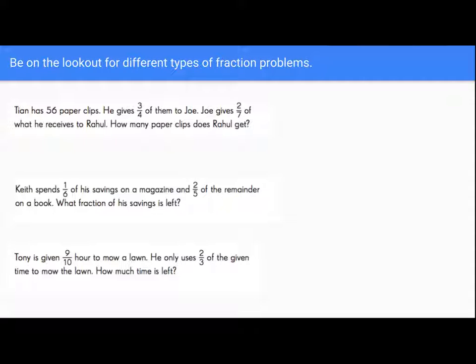The wording is really going to help us understand what type of bar model we can draw to help us solve the problem. So we've seen this first problem before. It says Tian has 56 paperclips. He gives three-fourths of them to Joe. So this problem, I really want to annotate and understand that I actually have a total here. My 56 paperclips, I know that that is a total. So when I draw my bar model, I'm actually going to have a total here that says 56.